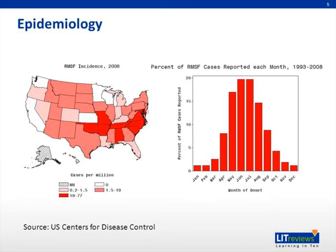Let's discuss the epidemiology of Rocky Mountain Spotted Fever. This is an illness that was initially, as the name would suggest, described in the Rocky Mountain region of the United States — that is, in the northwest around Montana and Idaho. However, more recently, the disease has settled around the southeastern portion of the country, with North Carolina and Oklahoma being its highest incidence, accounting for over one-third of all reported cases.